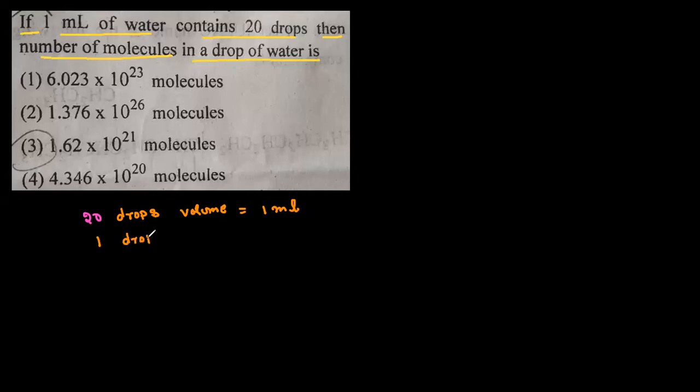One drop volume, how to find out? That is, 1 by 20, 1 by 20 ml. 1 by 20 ml is the one drop of volume.